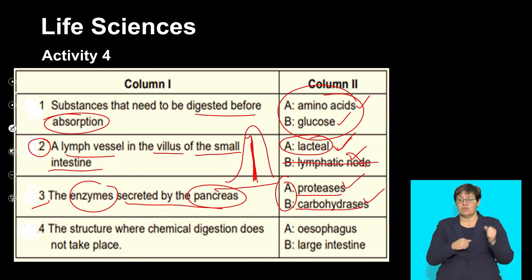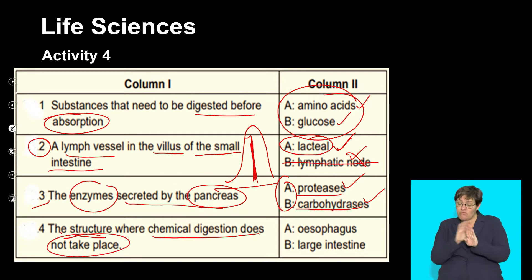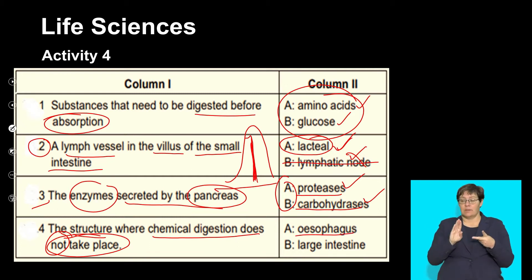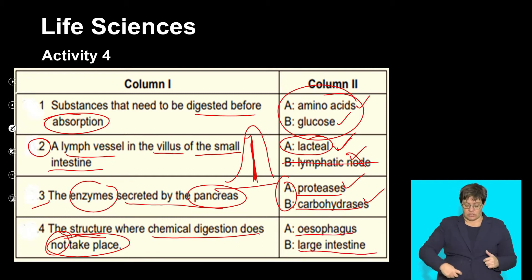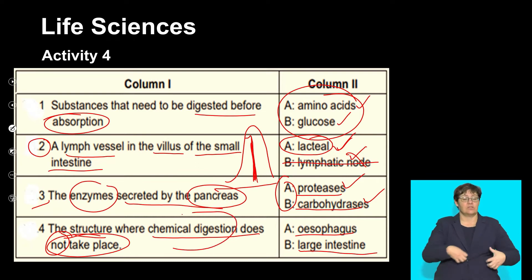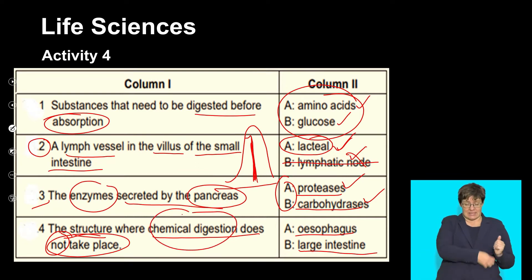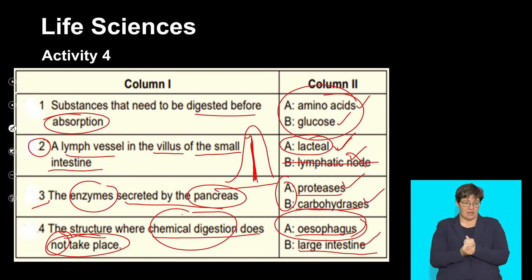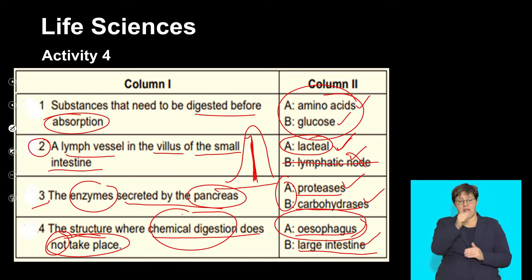3.4: The structure where chemical digestion does NOT take place — focus on the words 'does not take place.' The options are A, the esophagus, and B, the large intestine. We know that chemical digestion takes place in the intestine. However, the esophagus is a tube that connects the mouth to the stomach, and in that tube no digestion takes place — purely food moving through. So the answer here will be A only.